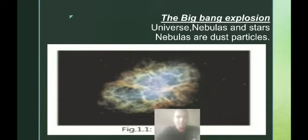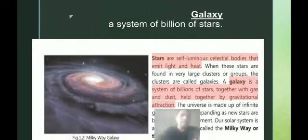Nebulas are dust particles formed by the Big Bang explosion. Stars are self-luminous celestial bodies, that means they have their own heat and light. A galaxy is a system of billions of stars formed together with gas and dust held together by gravitational attraction. There are a number of galaxies in the universe.